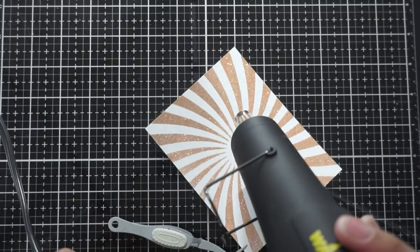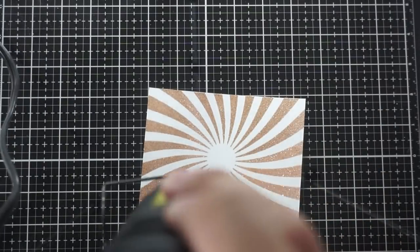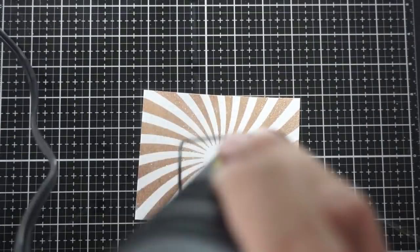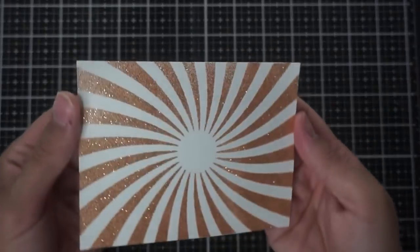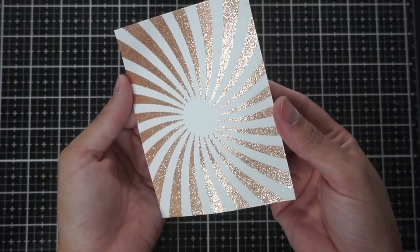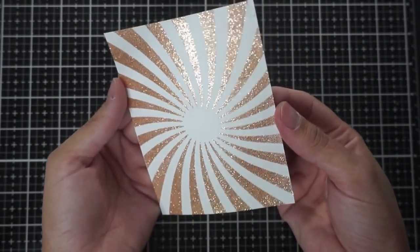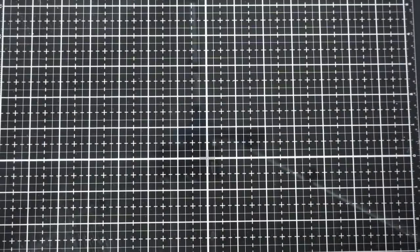I'm going to leave the tweezers on there because it weighs the cardstock down and it won't fly away when I'm embossing it. I just made sure that my heat gun was heated up for about 30 to 45 seconds beforehand so that it was hot enough and didn't warp my paper. You can see it's super sparkly which is a lot of fun and I'm now using the Sunburst die.